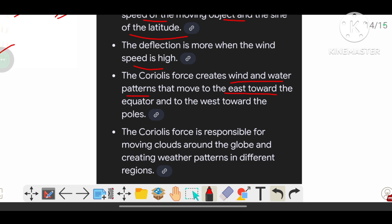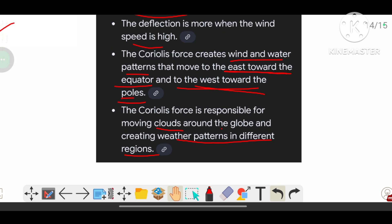The Coriolis force creates wind and water patterns that move east toward the equator and west toward the poles. It is responsible for moving clouds around the globe and creating weather patterns in different regions.